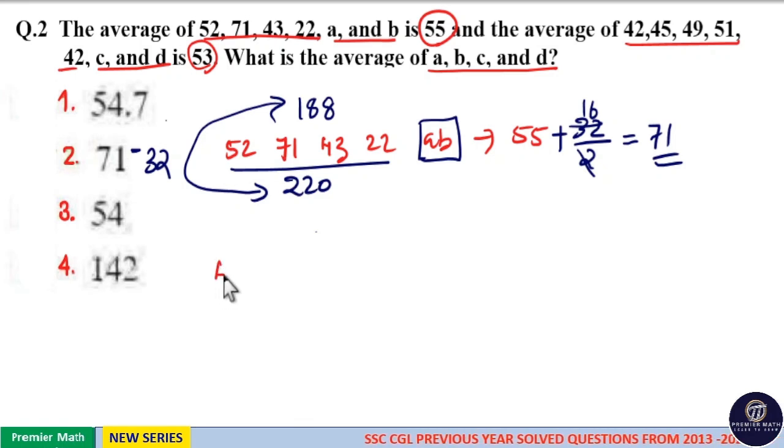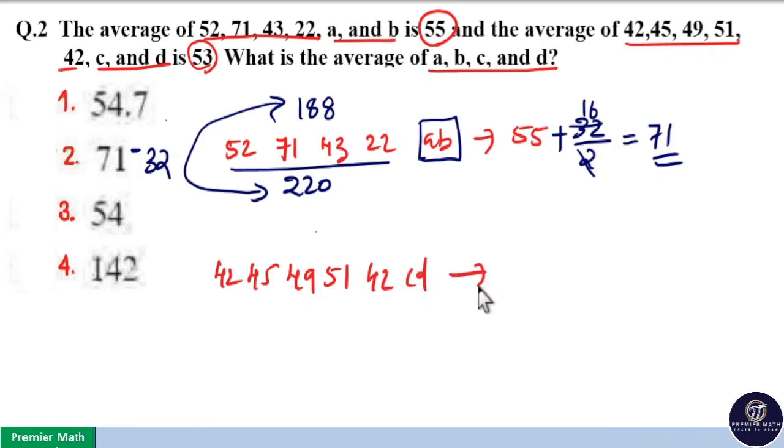Same way here, the average of 42, 45, 49, 51, 42, c, and d is equal to 53.